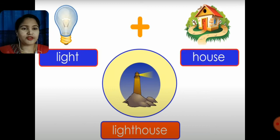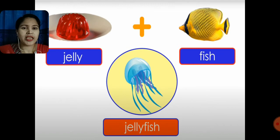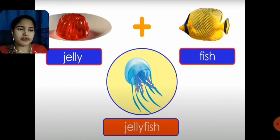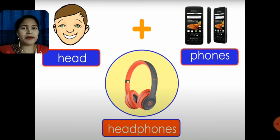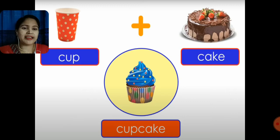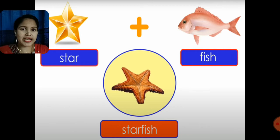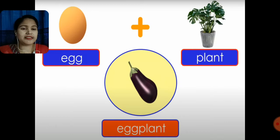Light plus house gives lighthouse. Jelly plus fish gives jellyfish. Pea plus nuts gives peanuts. Head plus phones gives headphones. Cup plus cake gives cupcake.